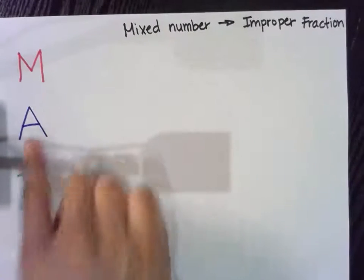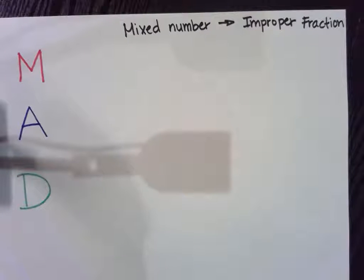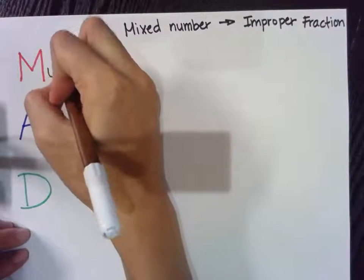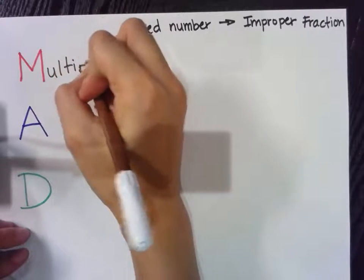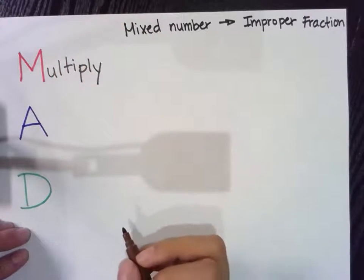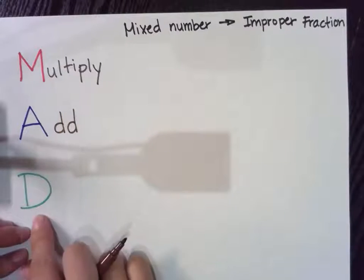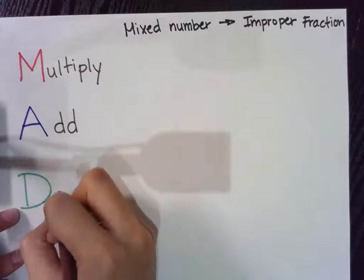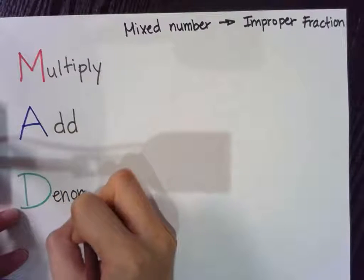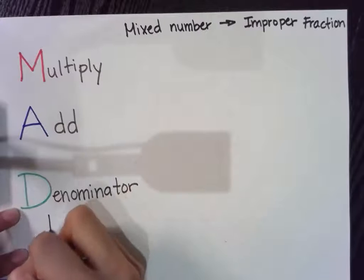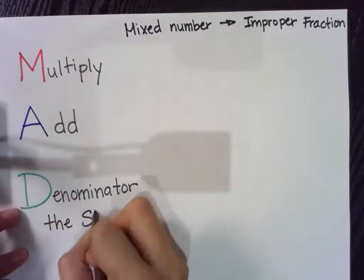So MAD is an acronym and what that means is that each letter stands for something. M stands for multiply, A stands for add, D is denominator the same.